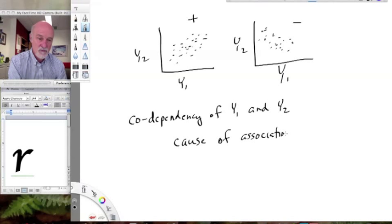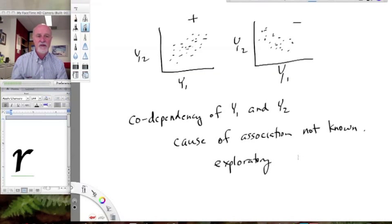We're looking at their codependency or their association. We don't know the cause. So the cause of the association is not necessarily known. And generally it's not known. So correlation is often used in an exploratory sense when we don't have any underlying hypothesis about one causing the other, but we're just looking at the degree of association between two variables. In other words, we don't understand necessarily the underlying biology behind the association.